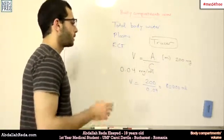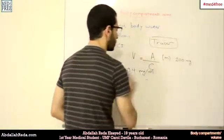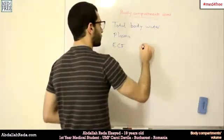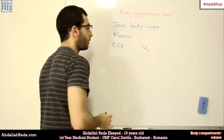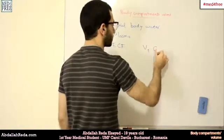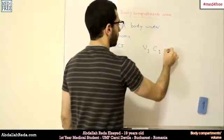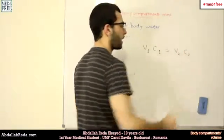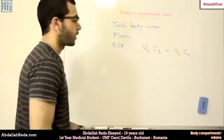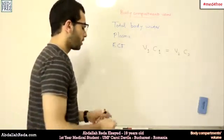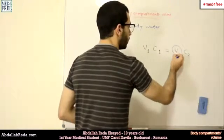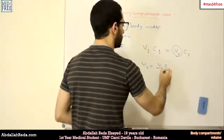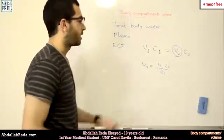There is another method called the dilution method. This is quite simple: V1 times C1, the first volume and its first concentration, equals V2 times C2 after adding the tracer. So if you want to find V2, V2 equals V1 times C1 divided by C2. This is used when V1 is known.